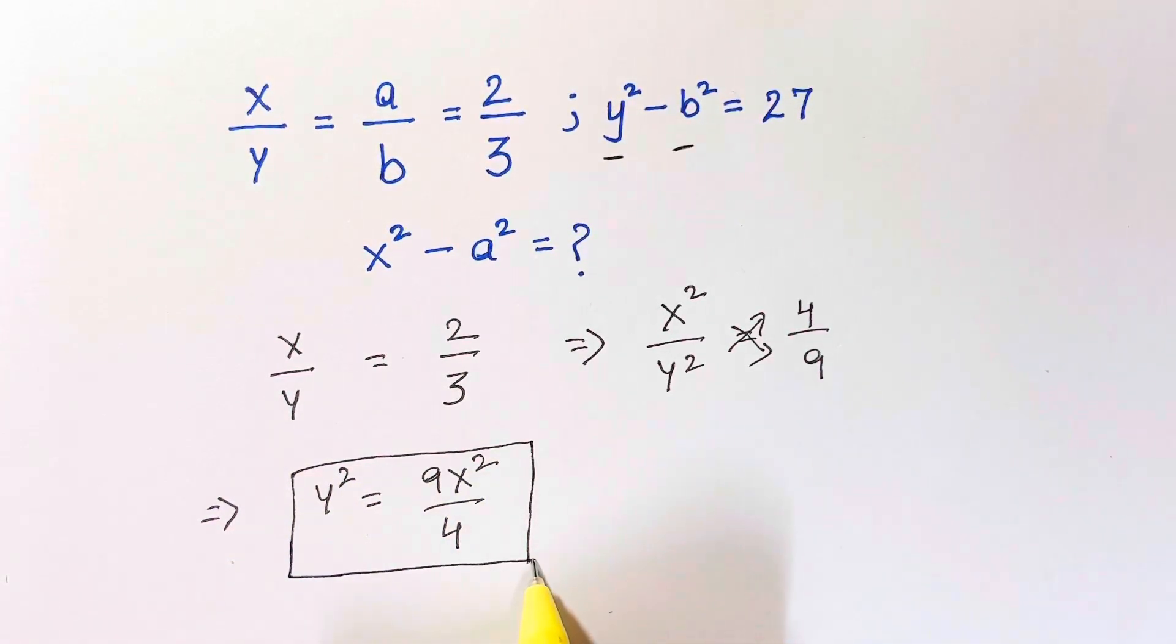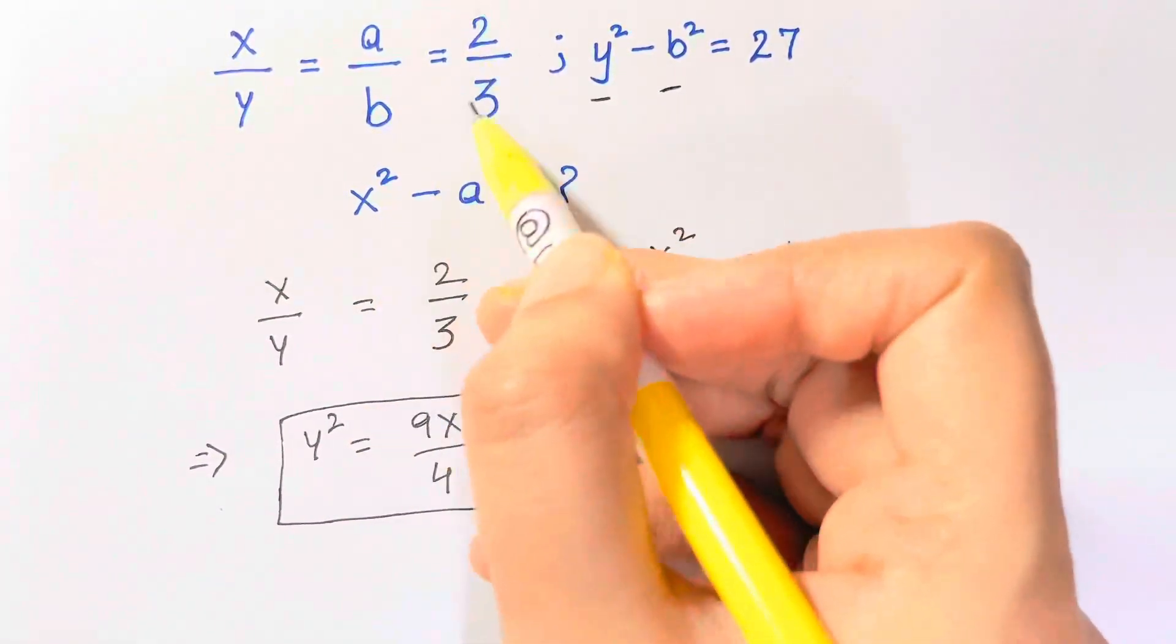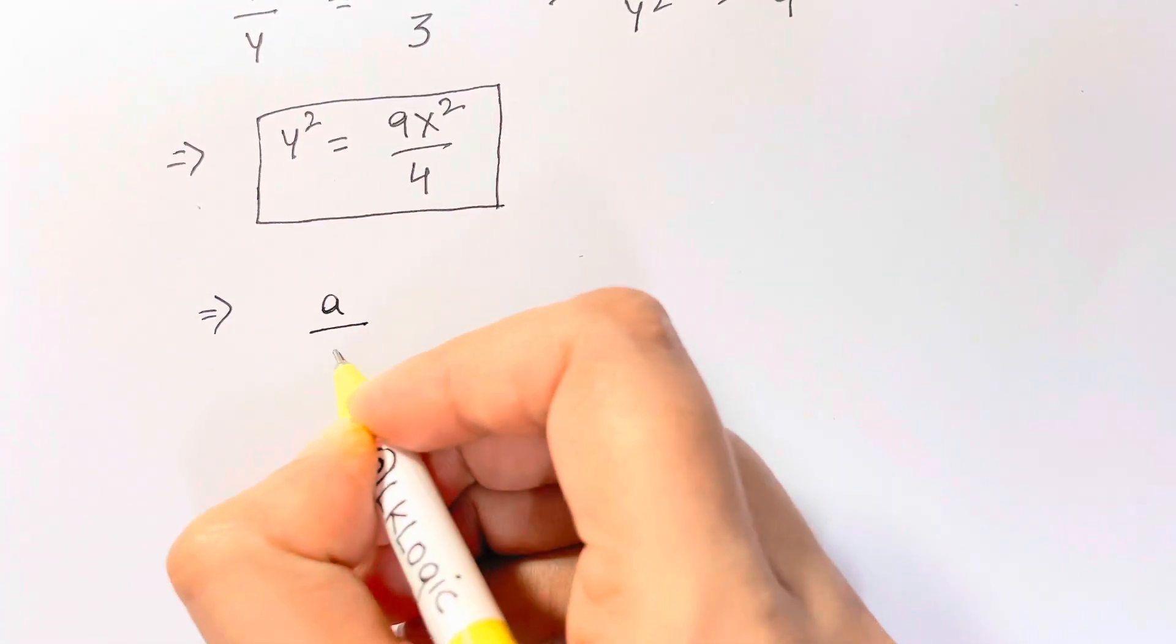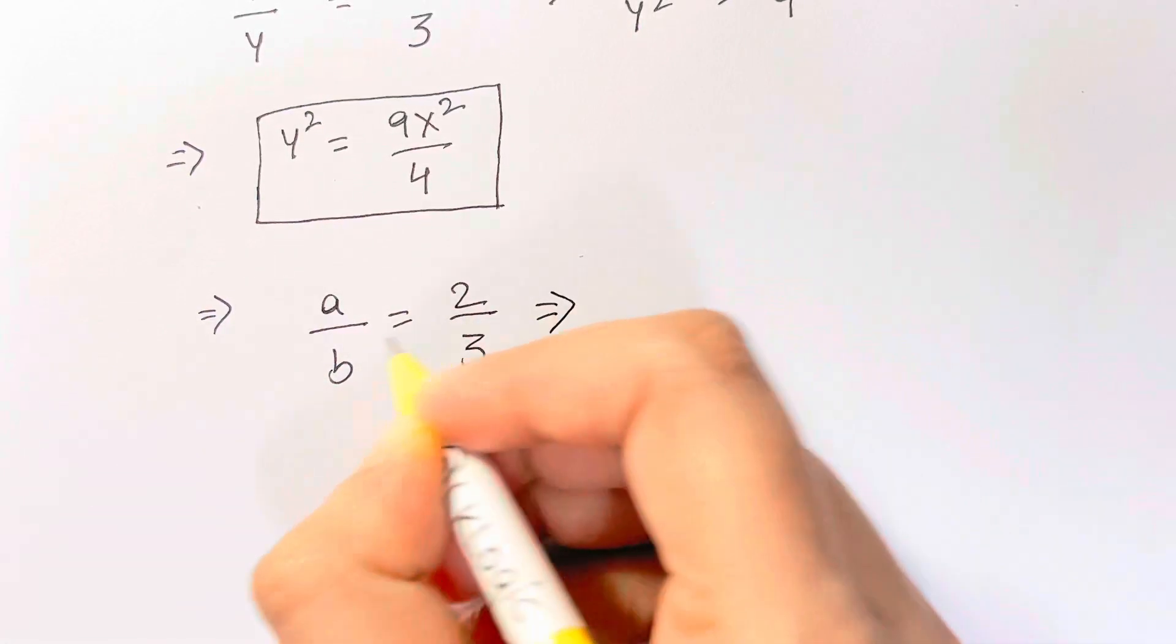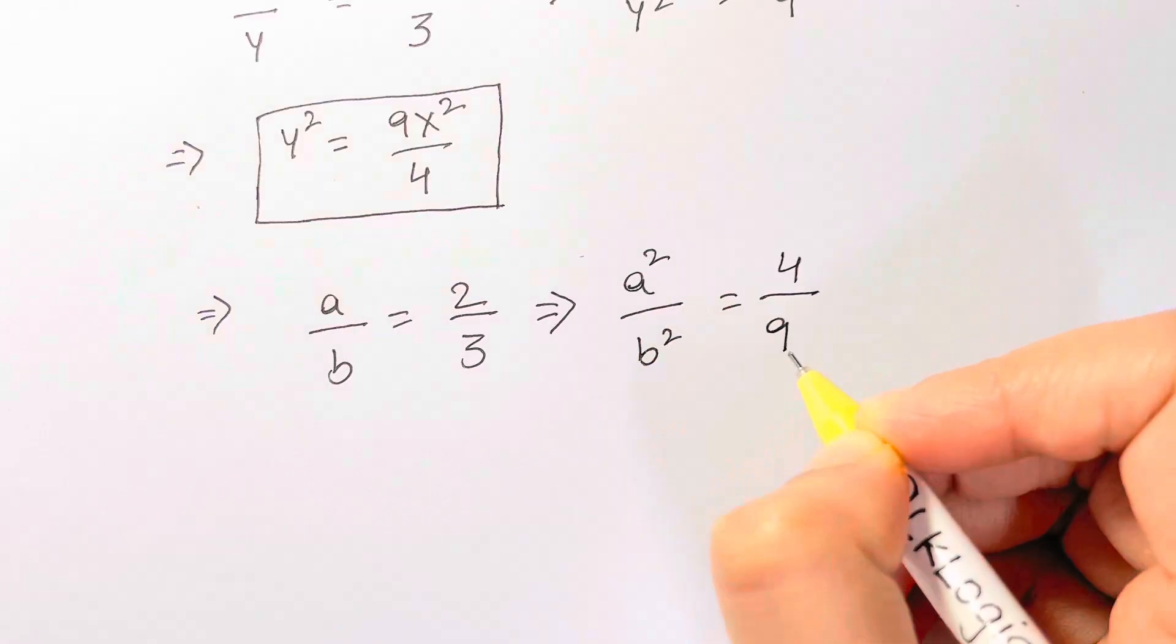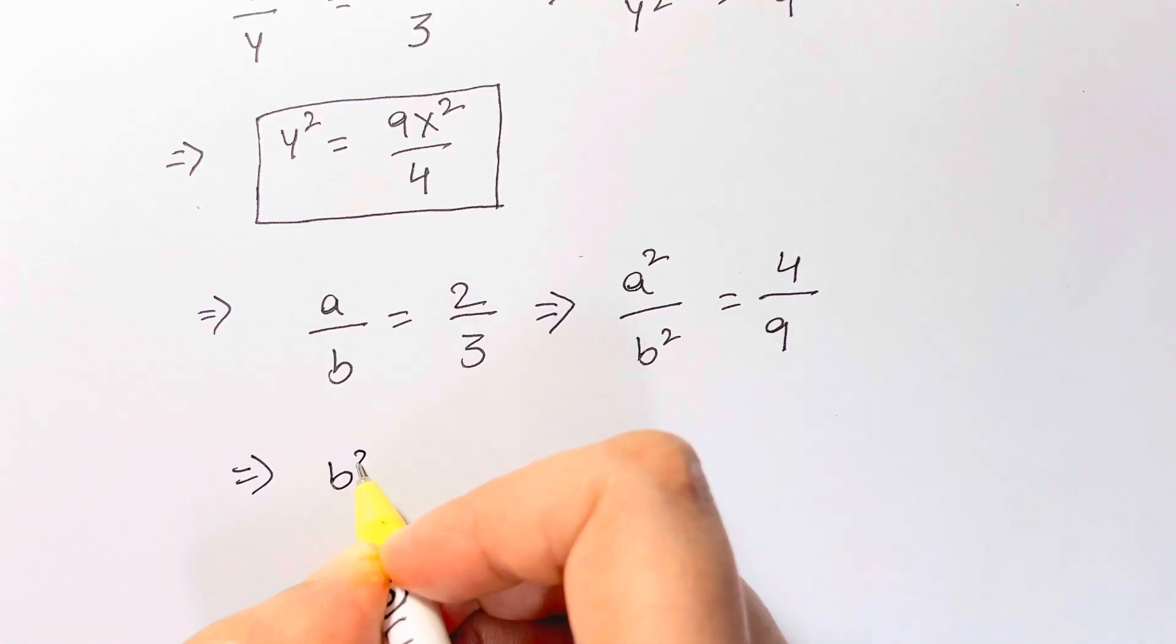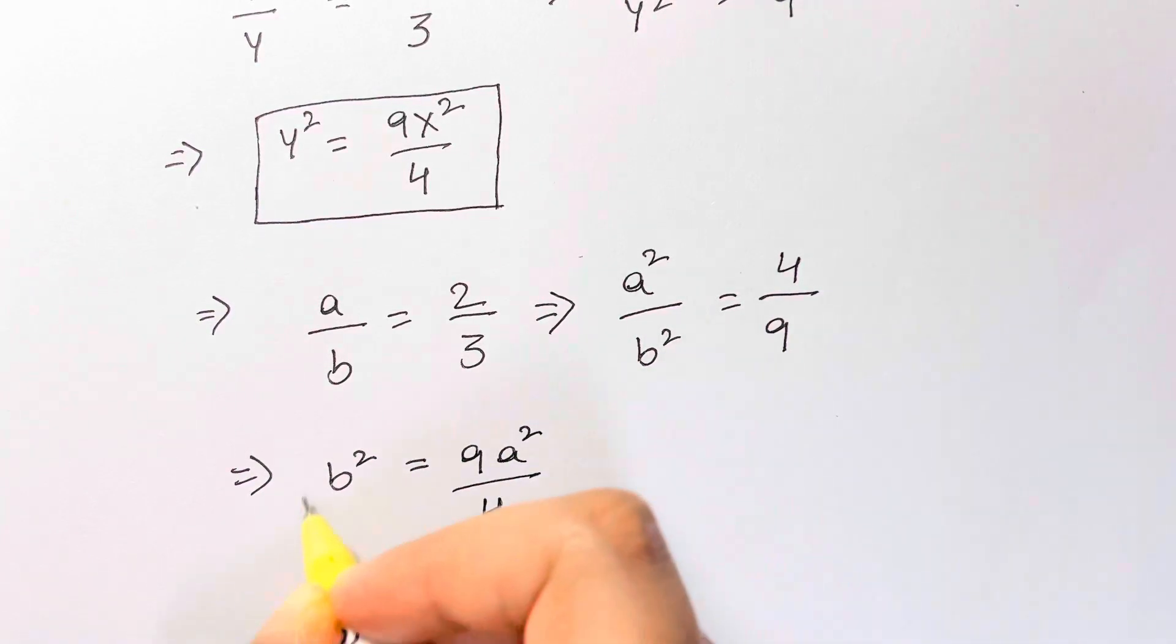Now I've got y square. Let me find out what is b square. So for b square, I'm going to equate this and this. a over b is equal to two thirds. Let's square: a square over b square is equal to four over nine. Now I just want b square from this, so b square will be nine a square over four.